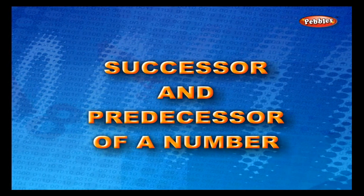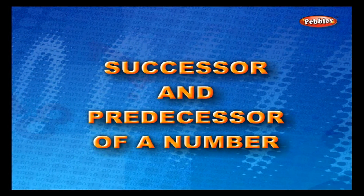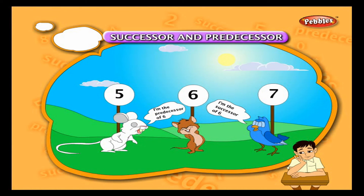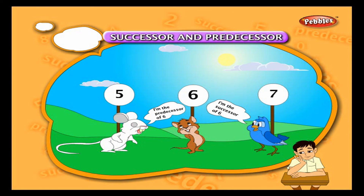Successors and predecessors of a number: let us take three numbers — five, six, and seven. Five is the predecessor of six because five comes before six, and seven is the successor of six because it comes after six.